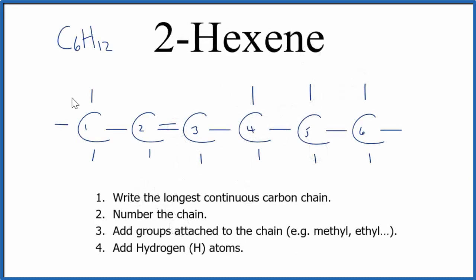To recap, this is the structural formula of 2-hexene—six carbons with a double bond on the second carbon. But you could go further and look at the cis-2-hexene and trans-2-hexene isomers. This is Dr. B, and thanks for watching.